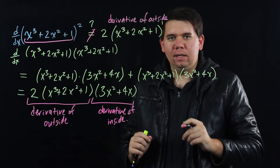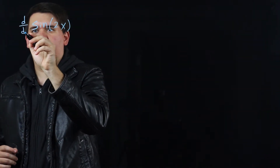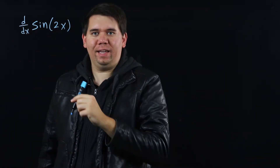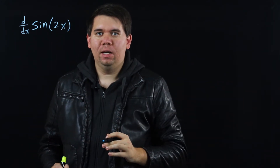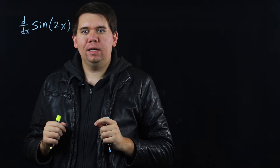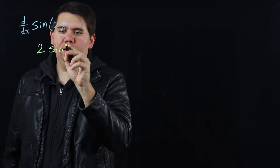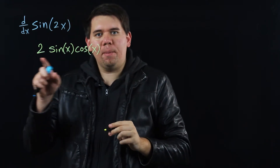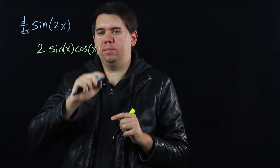Let's take this idea and try one more example. Consider the function sine of 2x, and we want to calculate its derivative. Again, if you were just going to take the derivative of the outside function — just the sine — you would get cosine of 2x. But just as we saw before, that's not quite enough. One way to figure out what's going on is to remember that sine of 2x is defined to be 2 sine x times cosine x — this is our double angle formula.